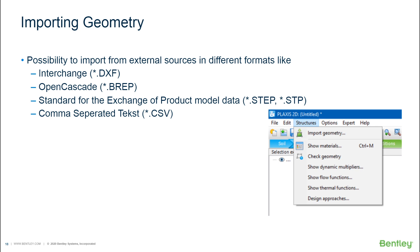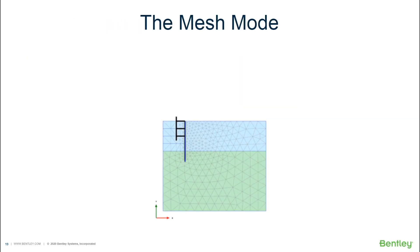So far, we have talked about soil mode, where we define our subsoil, and structures mode, where we draw our excavation walls, draw our embankment, define our anchors, and define our piles. Now we are done with the model — we have finished creating everything that will be included in our simulation — and we make the transition to mesh mode.